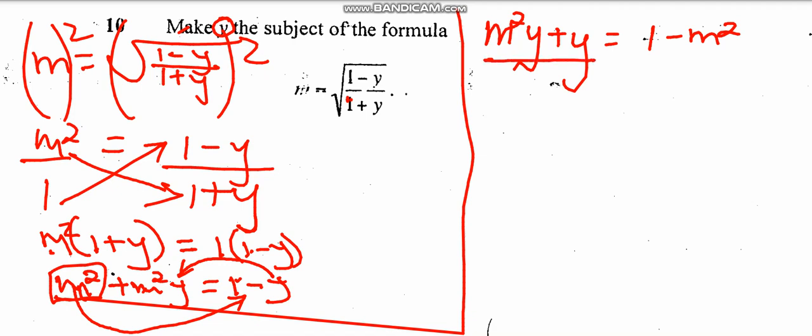Let me factorize this. The common factor is just y, bracket. y into m squared y, it's just m squared since y and y cancel each other. Plus y into y is just 1, equivalent to 1 minus m to the power of 2.